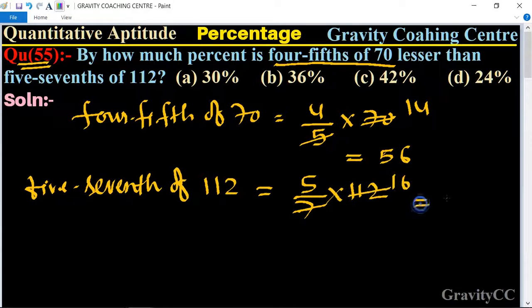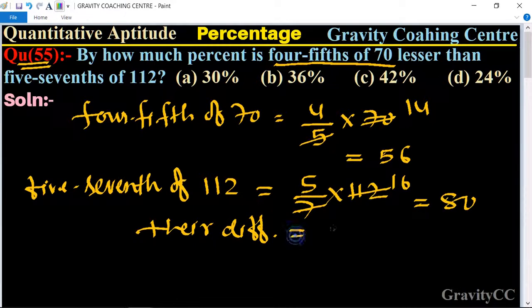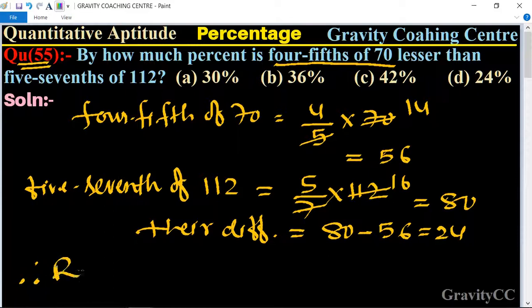So their difference is equal to 80 - 56, which is equal to 24. So find how much percent. Therefore required percentage is equal to 24/80 × 100.